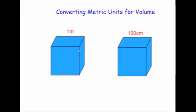If the width of this one is one meter, then the height is one meter and the depth is one meter, so the volume would be one meter times one meter times one meter, which gives a volume of one meter cubed.